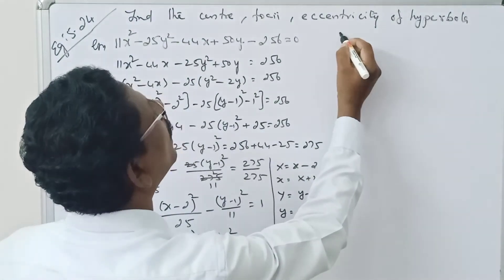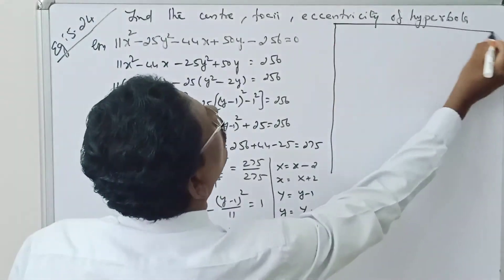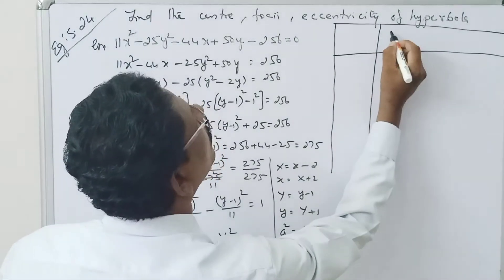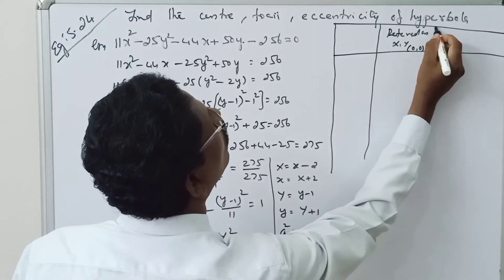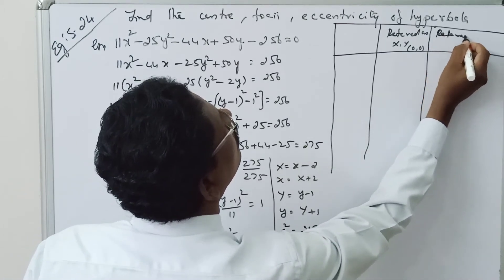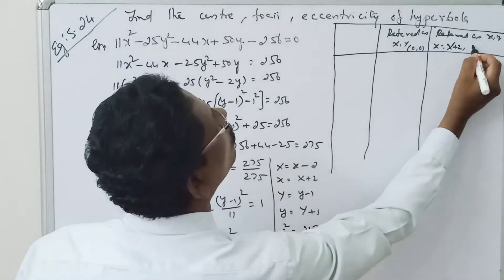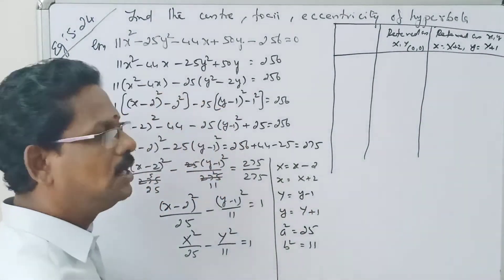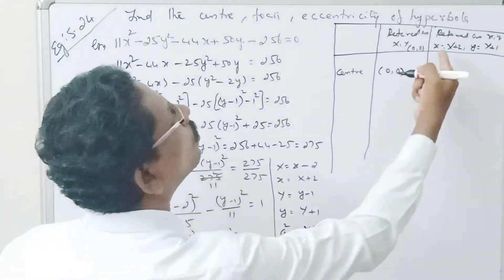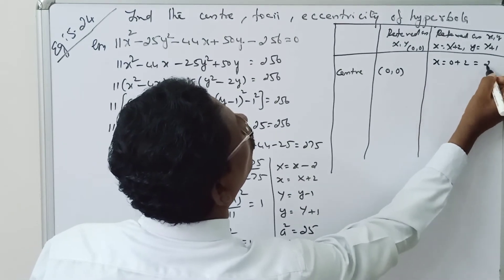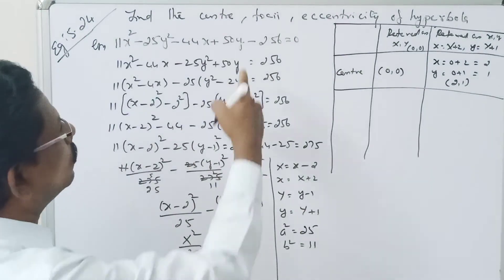In the new coordinates, the center is at (X, Y) = (0, 0). Converting back: small x = X + 2 = 0 + 2 = 2, and small y = Y + 1 = 0 + 1 = 1. So the center is (2, 1).